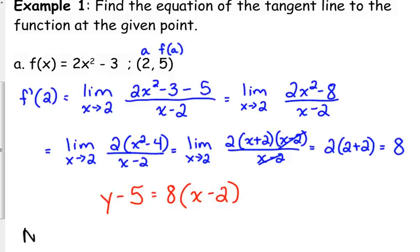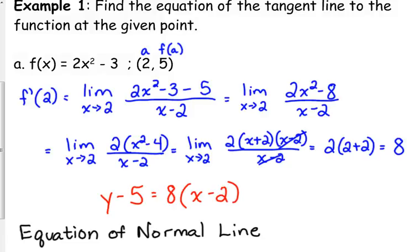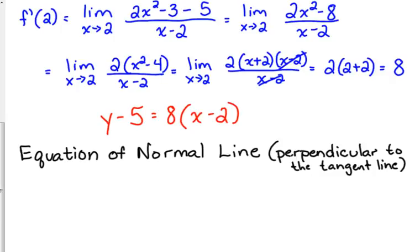Now, another thing that they will ask you sometimes is the equation of the normal line. I don't know that I've ever brought up the normal line before. You may have heard of it if you've taken physics or something like that. You may have heard this term before. But the normal line is perpendicular to the tangent line. So, what do we know about perpendicular lines? They form a 90-degree angle. In terms of their equations, how are they related? They have the opposite reciprocal slope.